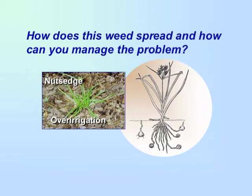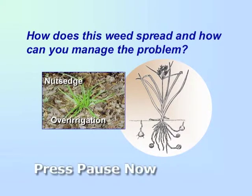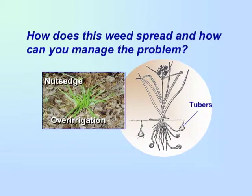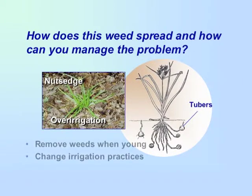How does this weed spread and how can you manage the problem? Nutsedge spreads by underground tubers. Remove weeds when they are young and change irrigation practices.